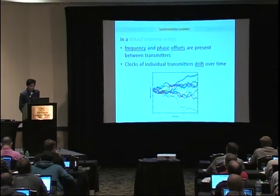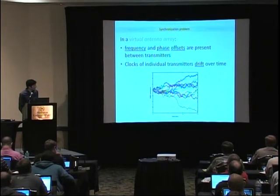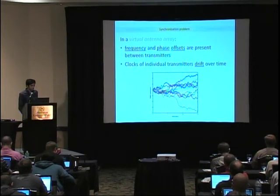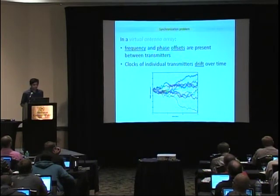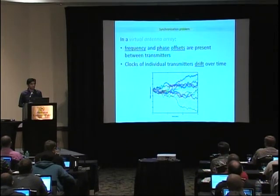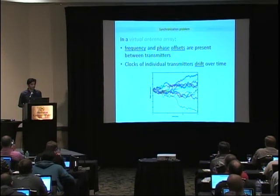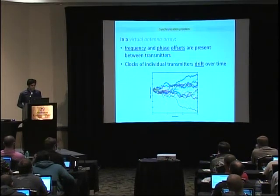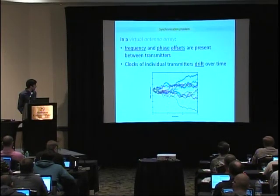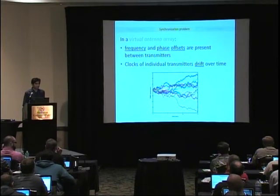Having motivated the concept of distributed beamforming, let's see what challenges we need to overcome to gain its benefits. When we have multiple transmitters, each having a single antenna and running its own clock, different transmitters will naturally have different frequency and phase offsets due to oscillator manufacturing limitations. The worst issue is that the clocks of individual transmitters drift over time — they may all be aligned at time zero but then deviate from each other. So not only do we have to compensate for the frequency and phase offsets, we have to track them periodically.